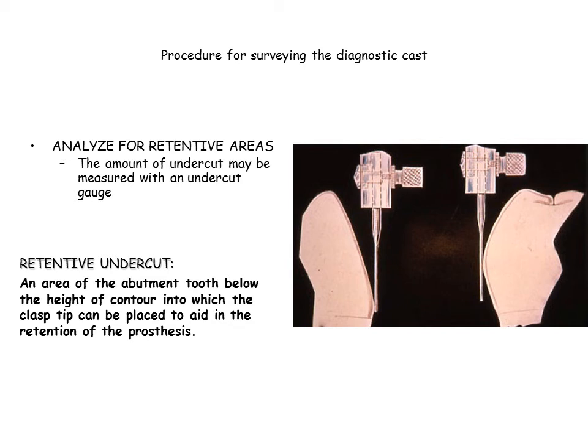49. Alter the cast position by tilting it laterally until not grossly different retentive areas exist on the principal abutment teeth. In tilting the cast laterally to establish reasonable uniformity of retention, it is necessary that the table be rotated about an imaginary longitudinal axis, without disturbing the anterior-posterior tilt previously established. 50. The resulting position is one that provides or makes possible parallel guiding planes, and provides for acceptable retention on the abutment teeth.